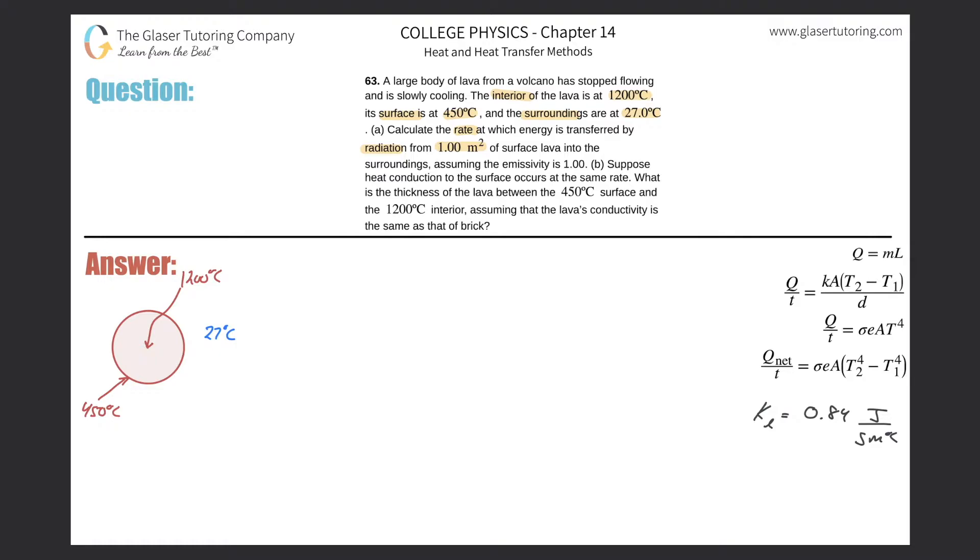So anytime we're talking about radiation, we're basically looking at these two formulas. Conduction would be this one. The one that we're going to need for part A—they're talking about radiation occurring between two different temperatures, the surface of the lava to the surroundings.